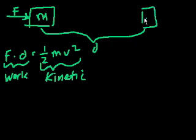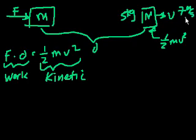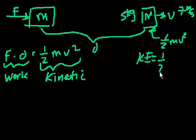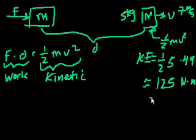So if I look at an object with mass m moving with velocity v, I would say it has a kinetic energy of ½mv². If the numbers are confusing, let's say this was a 5 kilogram object moving at 7 meters per second. The kinetic energy would be ½ × 5 × 7² = ½ × 5 × 49, which is approximately 125 newton meters — 125 joules.